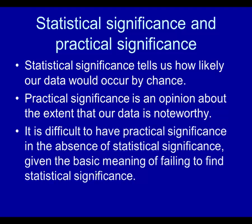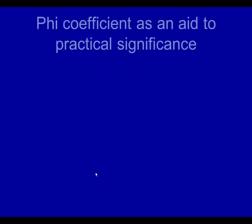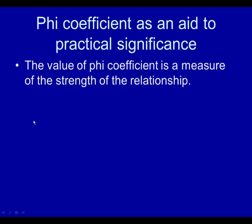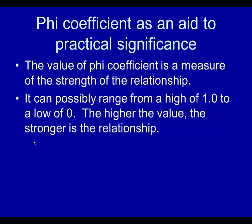It is difficult to have practical significance in the absence of statistical significance. If you fail to find statistical significance, you have not ruled out chance — you're saying the data is explained by chance rather than true meaning. Phi-coefficient is an aid to practical significance. The value of phi-coefficient is a measure of the strength of the relationship. It can range from a high of 1.0 to a low of 0. The higher the value, the stronger the relationship.